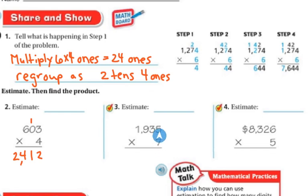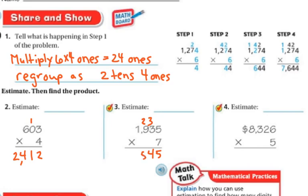Next: 5 times 7 is 35 — regroup 3 tens, put 5 ones below. Then 7 times 3 is 21, plus the 3 regrouped tens is 24 — put 4 below and regroup 2 hundreds. Now 7 times 9 is 63, plus 2 hundreds regrouped is 65 — regroup 6 and put 5 below. Finally, 7 times 1 is 7, plus 6 regrouped thousands is 13. The answer is 13,544.